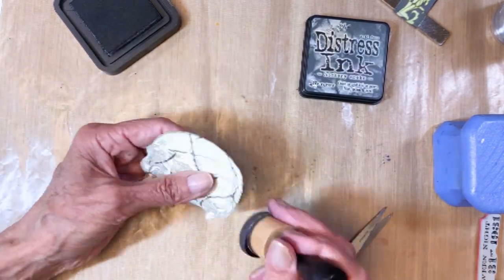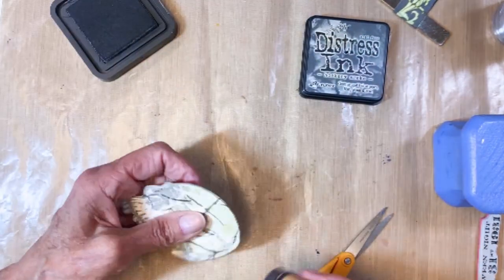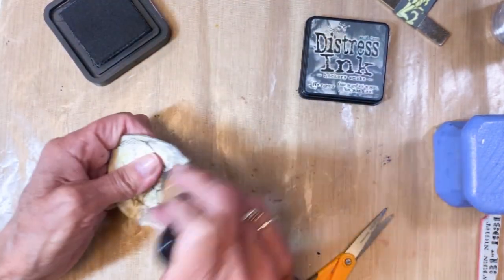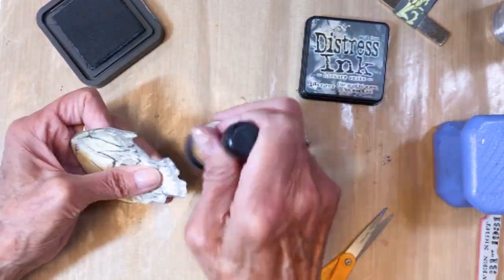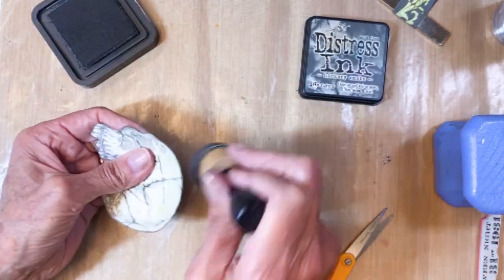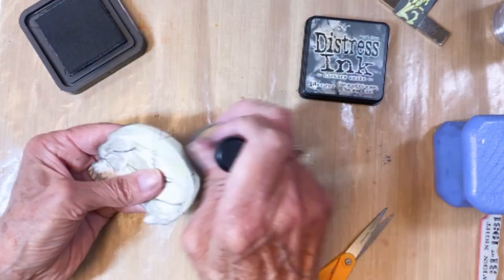There's my skeleton. Here I am with the hickory smoke ink, just kind of spreading it all over the top. I love playing with the distress inks.